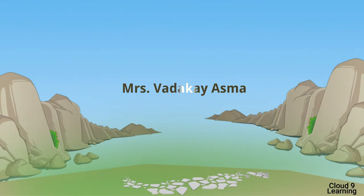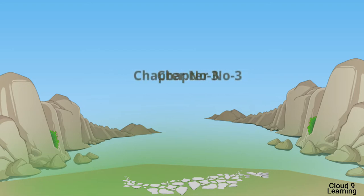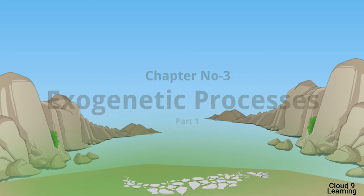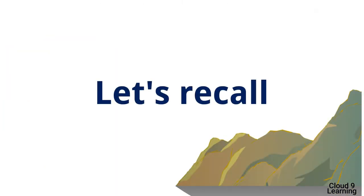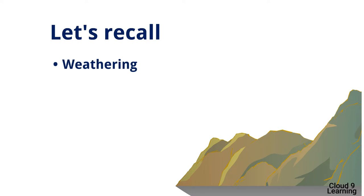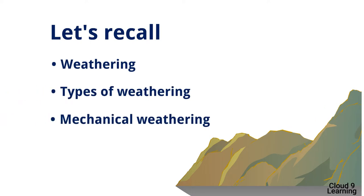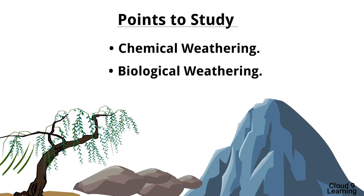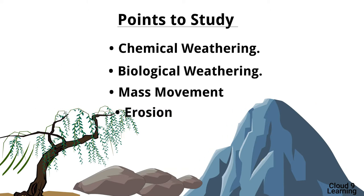Today, we are going to continue with the previous chapter of Geography, i.e. Chapter No. 3 Exogenetic Processes Part 1. In the previous session, we studied about Weathering, Types of Weathering and Mechanical Weathering. In today's session, we are going to study about Chemical Weathering, Biological Weathering, Mass Movement and Erosion.